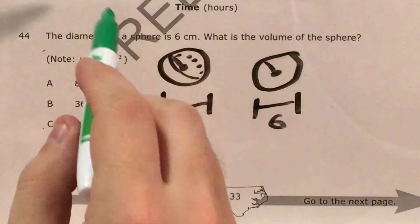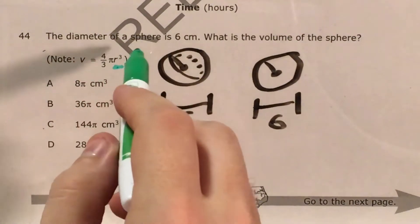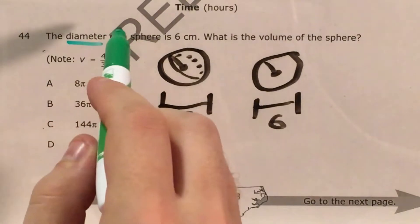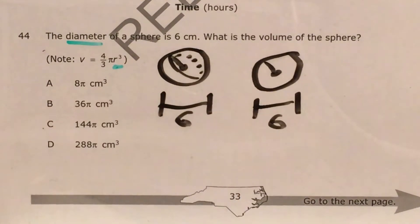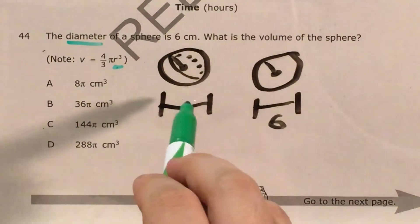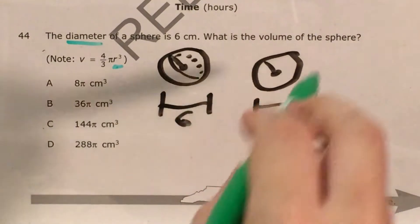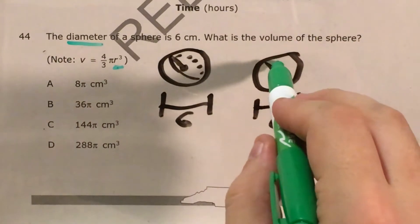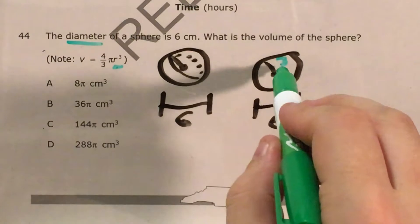First thing I want to point out is that they did not give us the radius like we would need for the formula, but the diameter. And our diameter is the distance all the way across a sphere, just like it's the distance all the way across a circle. And just like with a circle, my radius is going to be half my diameter, so three.